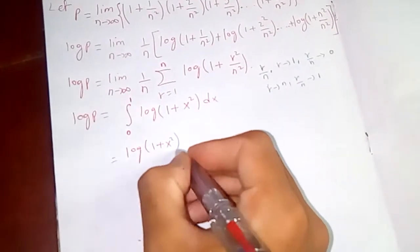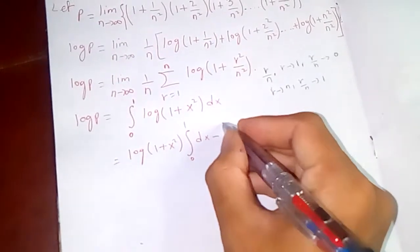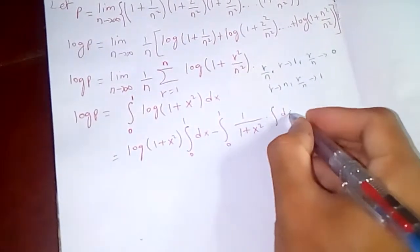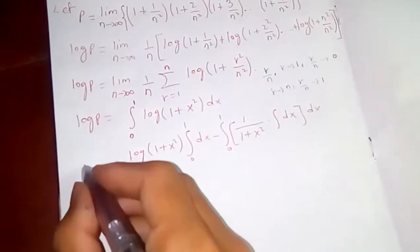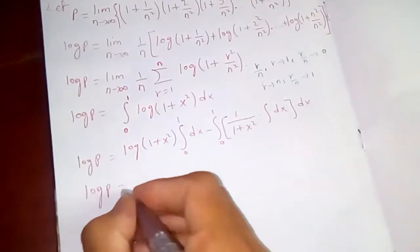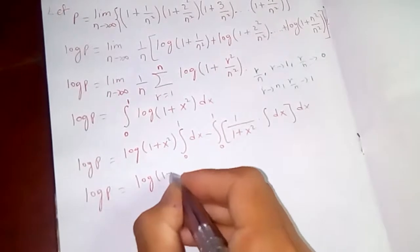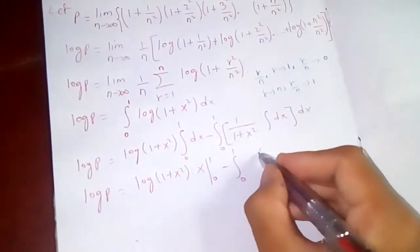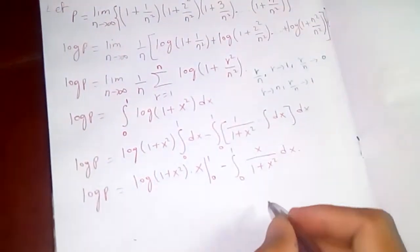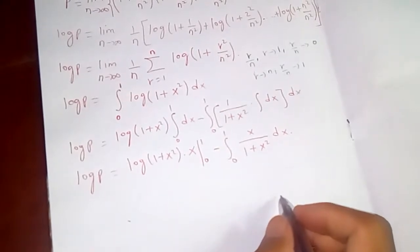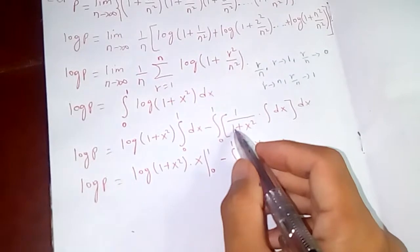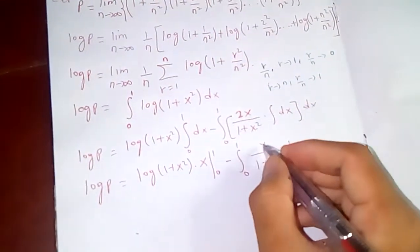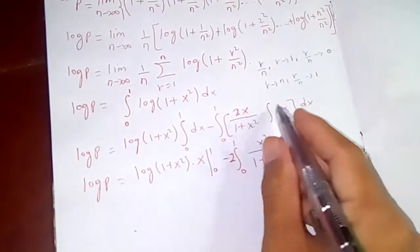We evaluate the integral using integration by parts. Log p equals the integral from 0 to 1 of log(1 + x²) dx. Integration by parts gives: log(1 + x²) · x evaluated from 0 to 1, minus the integral from 0 to 1 of x · (2x)/(1 + x²) dx, since the derivative of log(1 + x²) is 2x/(1 + x²).